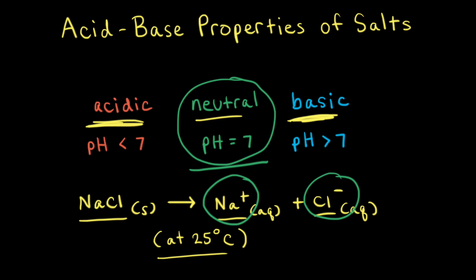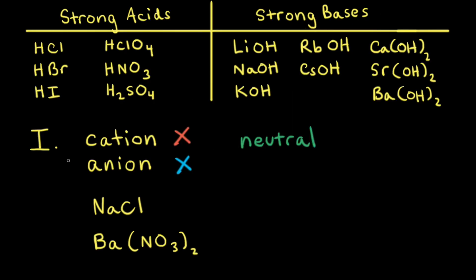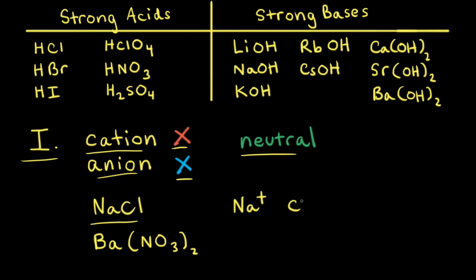Therefore, to predict if a salt solution is going to be acidic, neutral, or basic, we have to analyze whether or not the cation and the anion will react with water. There are four possible combinations of cation and anion. The first combination is neither the cation nor the anion will react with water, and if that's the case, the resulting solution will be neutral. We've already talked about an aqueous solution of sodium chloride being a neutral solution. The way to approach this is to look at the chemical formula: sodium chloride consists of a sodium cation and a chloride anion.